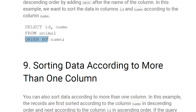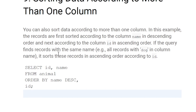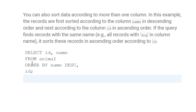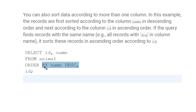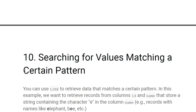Sorting data according to more than one column: we use ORDER BY with multiple columns, and the sequence matters. For example, SELECT id, name FROM animal ORDER BY name DESC, id — all entries are first sorted by name in descending order, and within that sorted result, ties are further sorted by id.